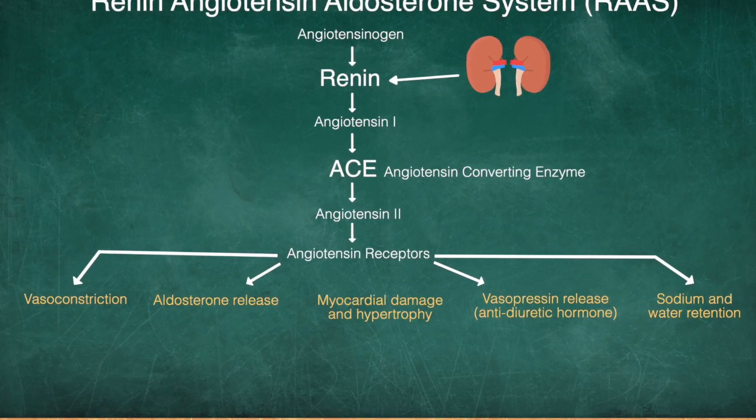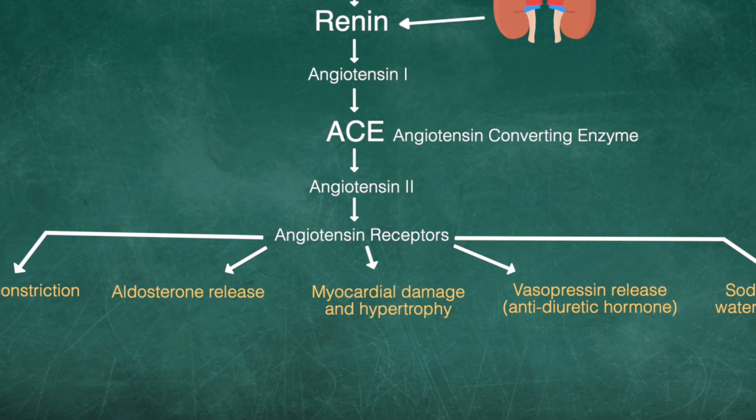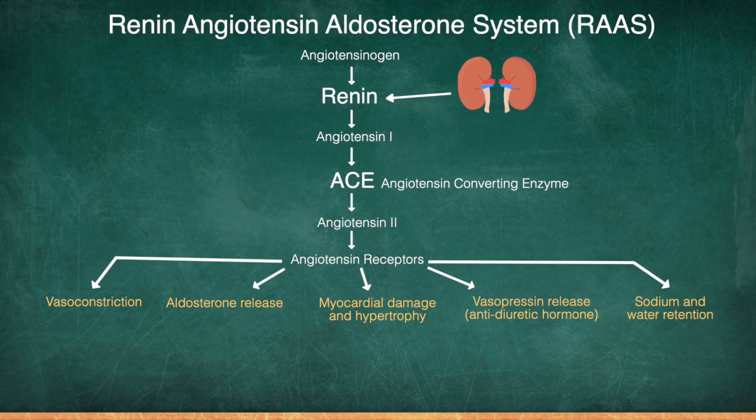Similar to what we see with the sympathetic nervous system, chronic activation of the RAS pathway results in damage to the myocardium and contributes to cardiac and vascular hypertrophy.